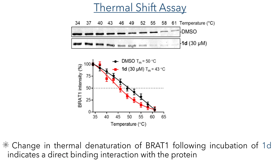To confirm that this protein was the target of the curcuzones, they carried out a thermal shift assay. In this experiment the protein was treated with either curcuzone 1D or DMSO as a control, and the samples were then heated and the concentration of the protein was determined using a western blot assay. This experiment showed that there was a change in the thermal denaturation of the protein when incubated with curcuzone 1D, indicating a direct binding interaction between this compound and the protein.